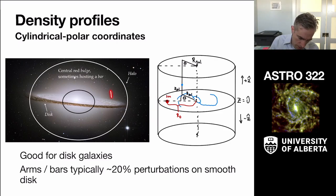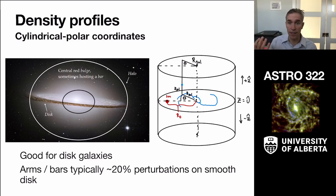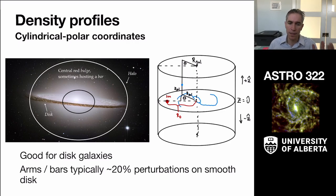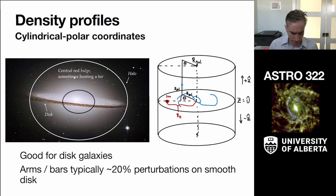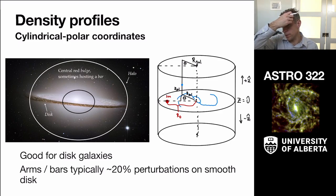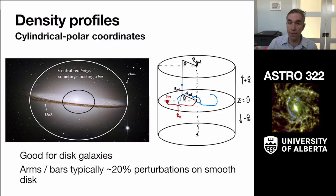Like the Sombrero galaxy, we treat it as a symmetric system. That gives us a good cylindrical polar coordinate system, using the distance out of the plane as the place where density really changes. Galaxies are actually pretty thin — the aspect ratio is about the thickness of two CDs or DVDs stuck together. Arms and stellar bars are only about 20 percent perturbations in the mass distribution; they just show up prominently in the light.